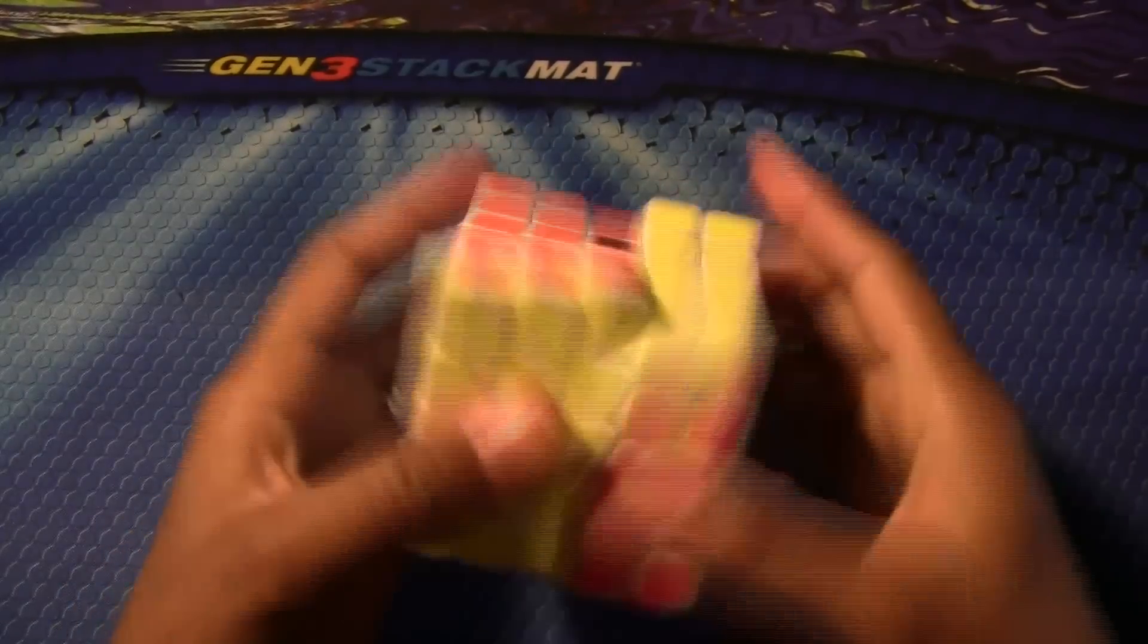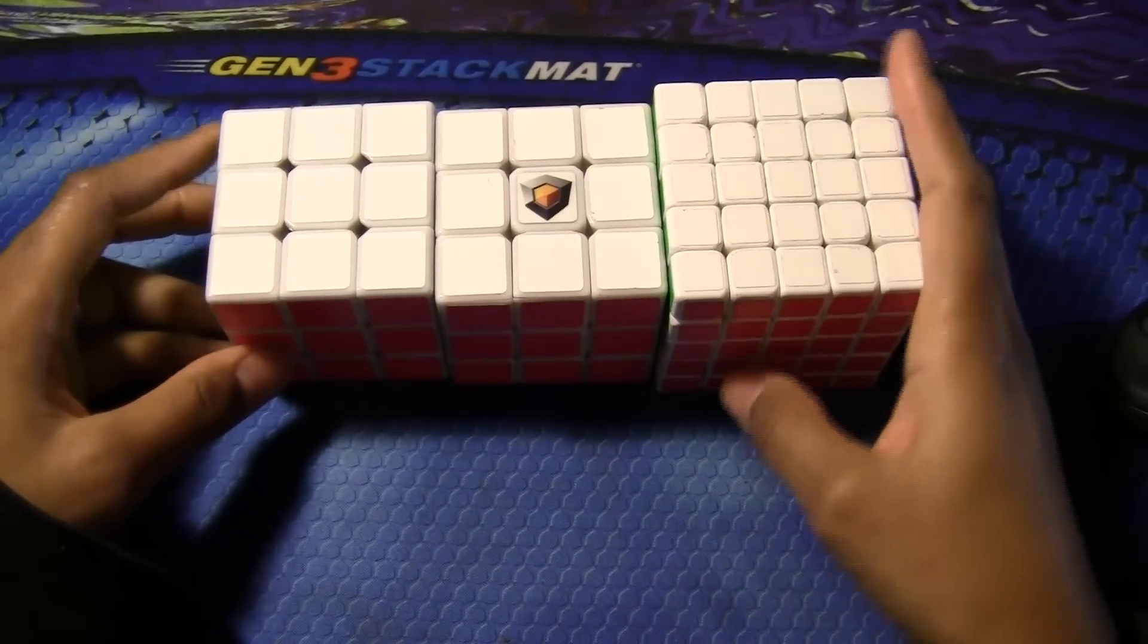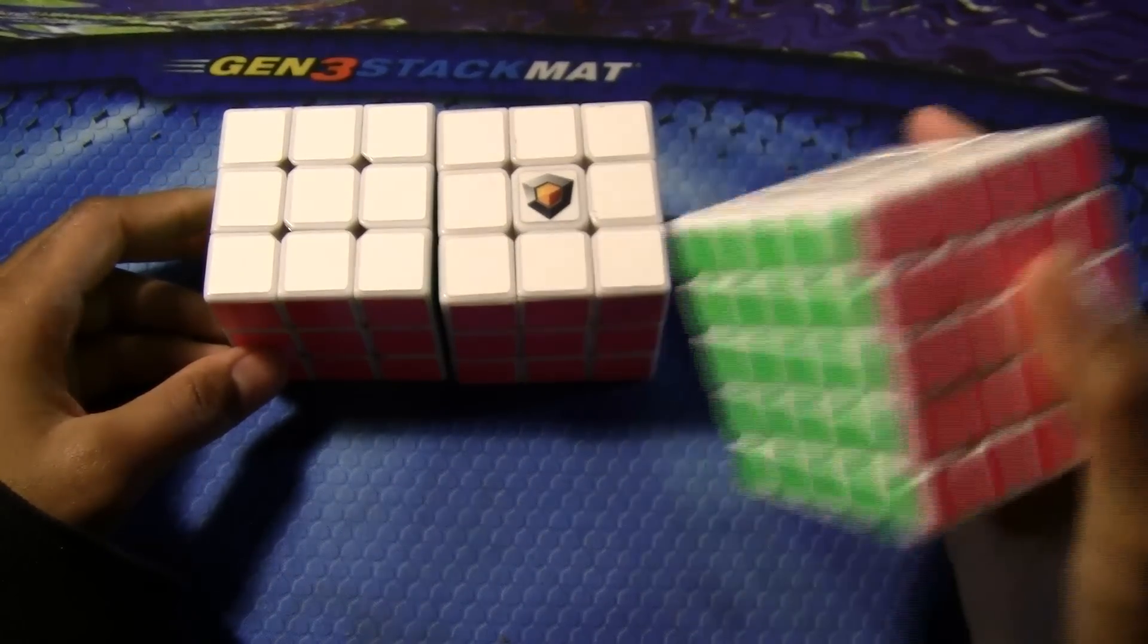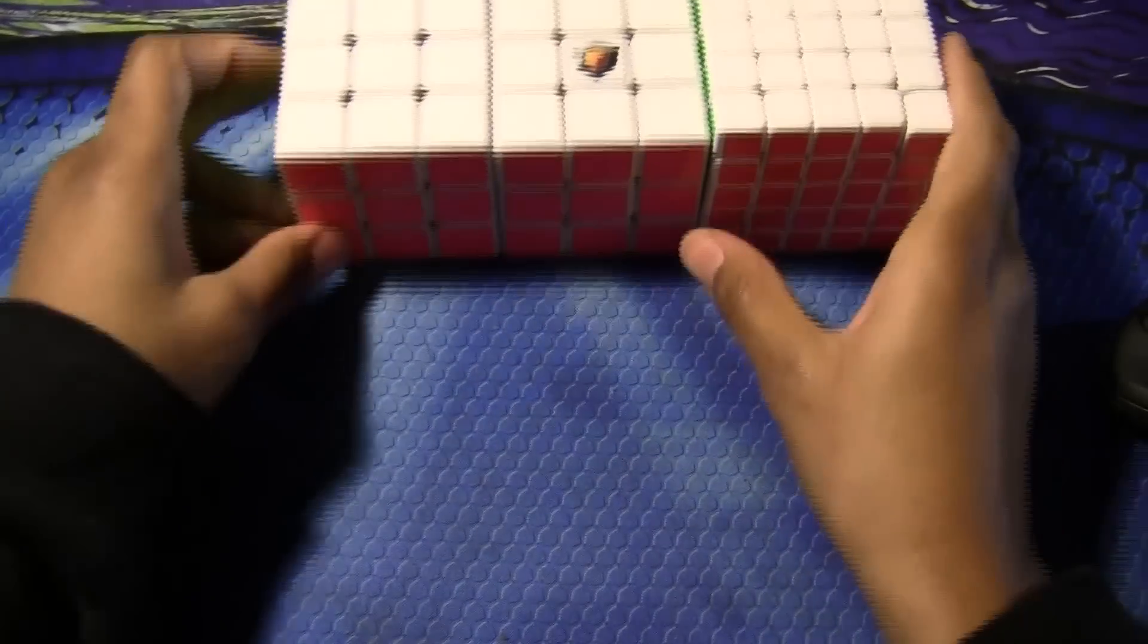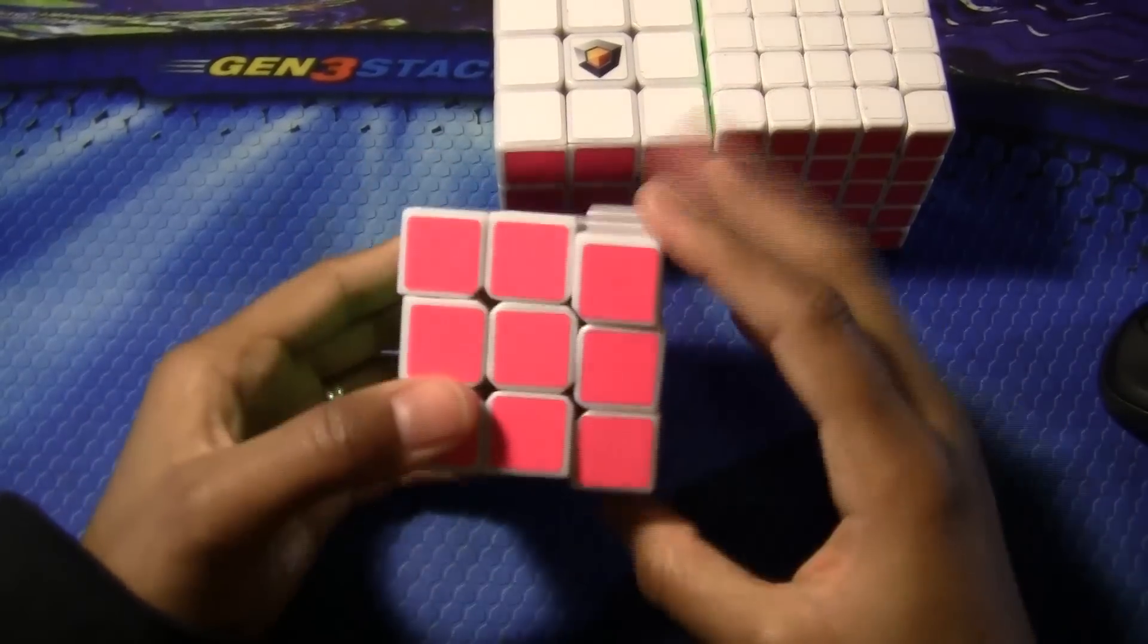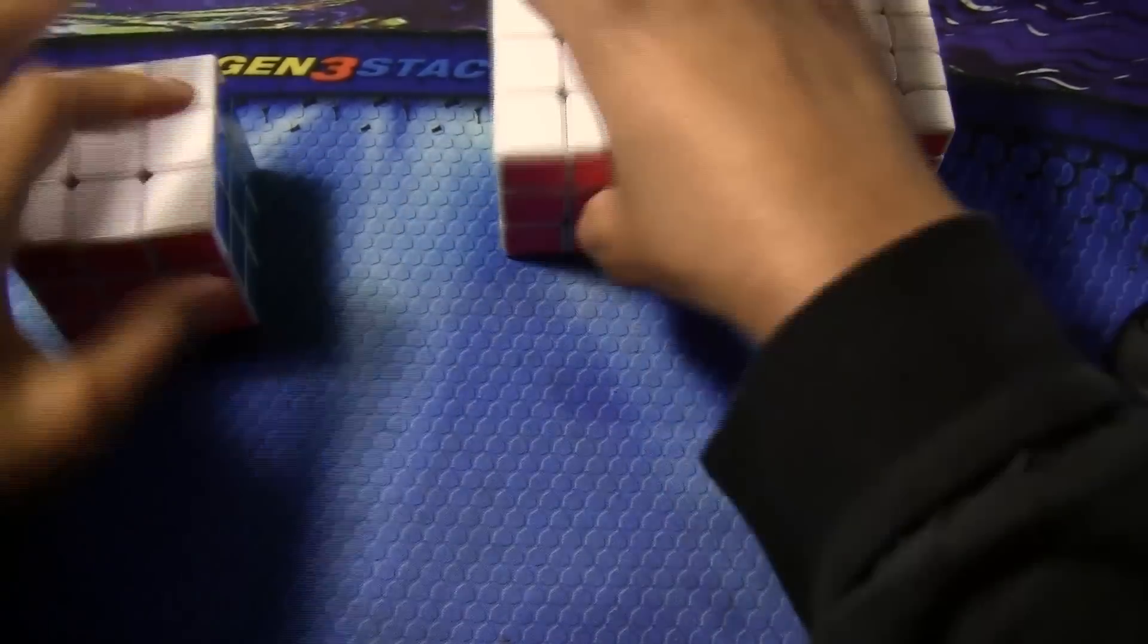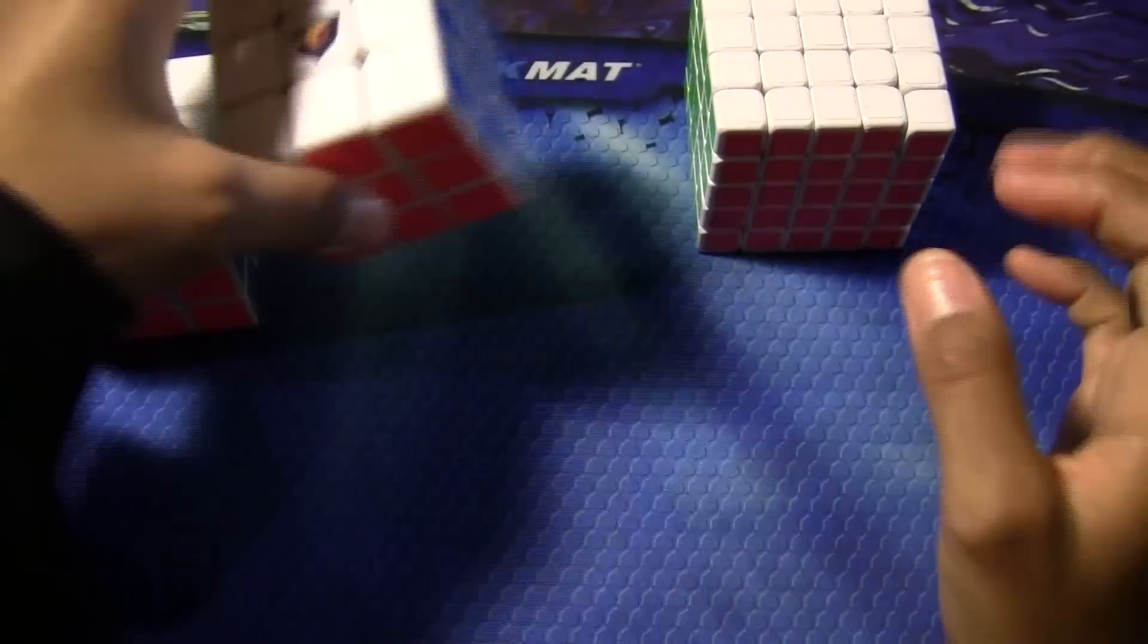Okay guys, so I lubed all these cubes and worked them in. I still think I need to work this 5x5 in a little bit more. But the control did control my fast Zanchi, so that is good. The rush did speed up my Guhong version 2 a little bit, so that's good.